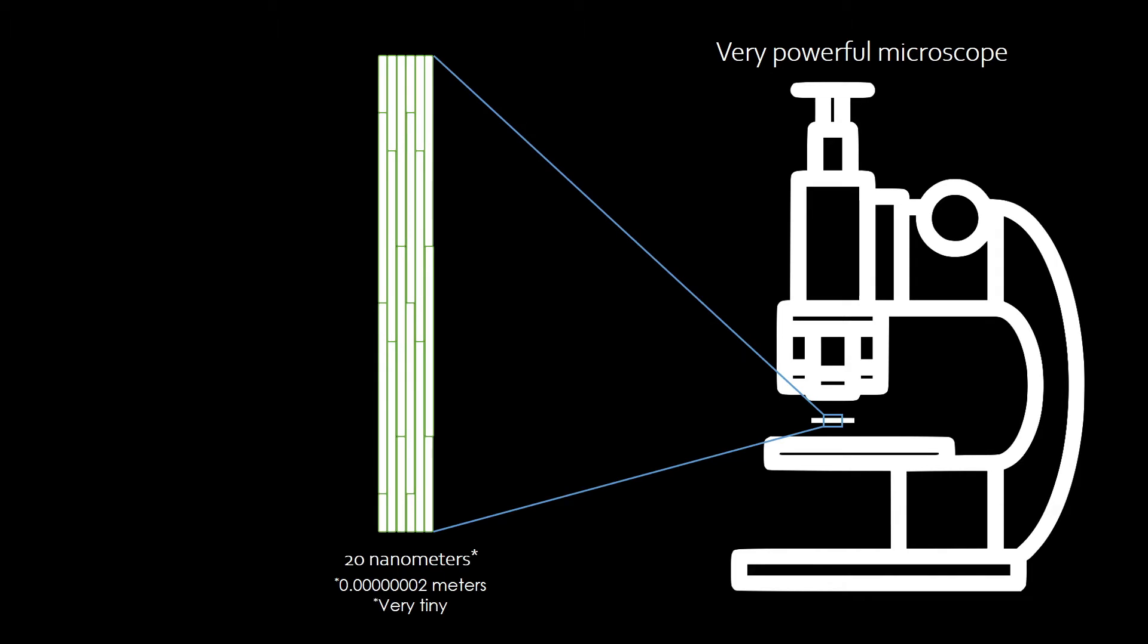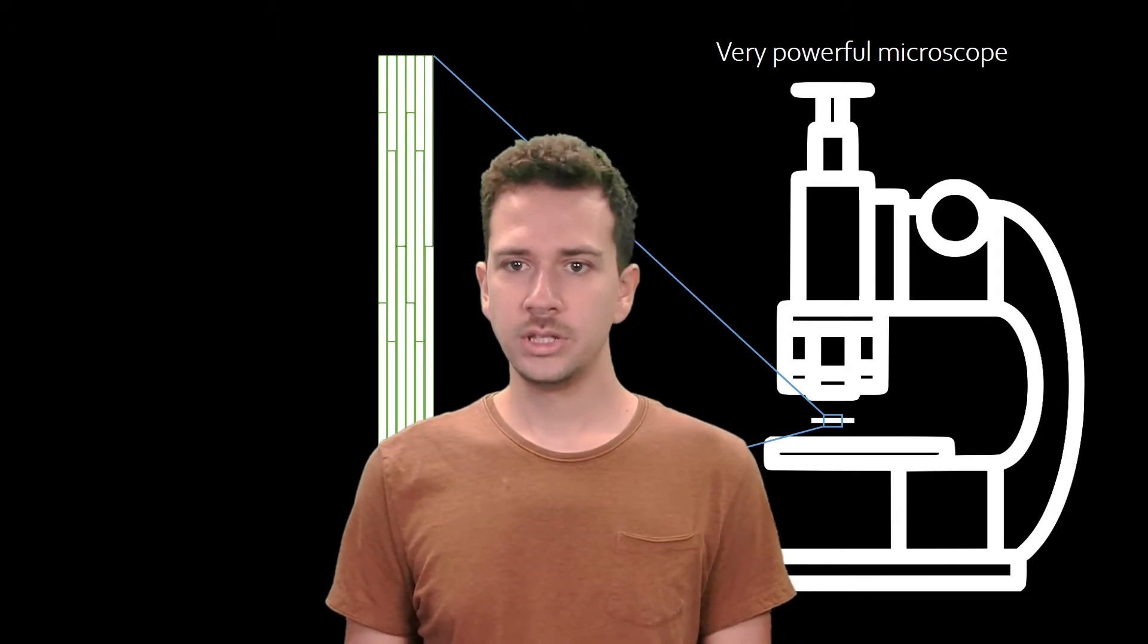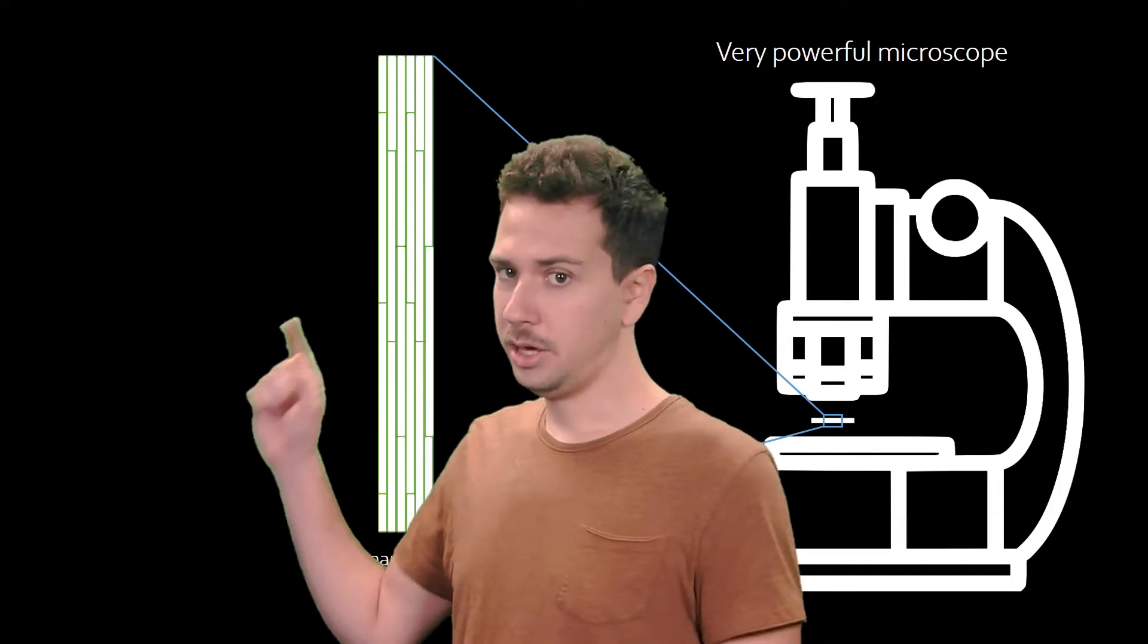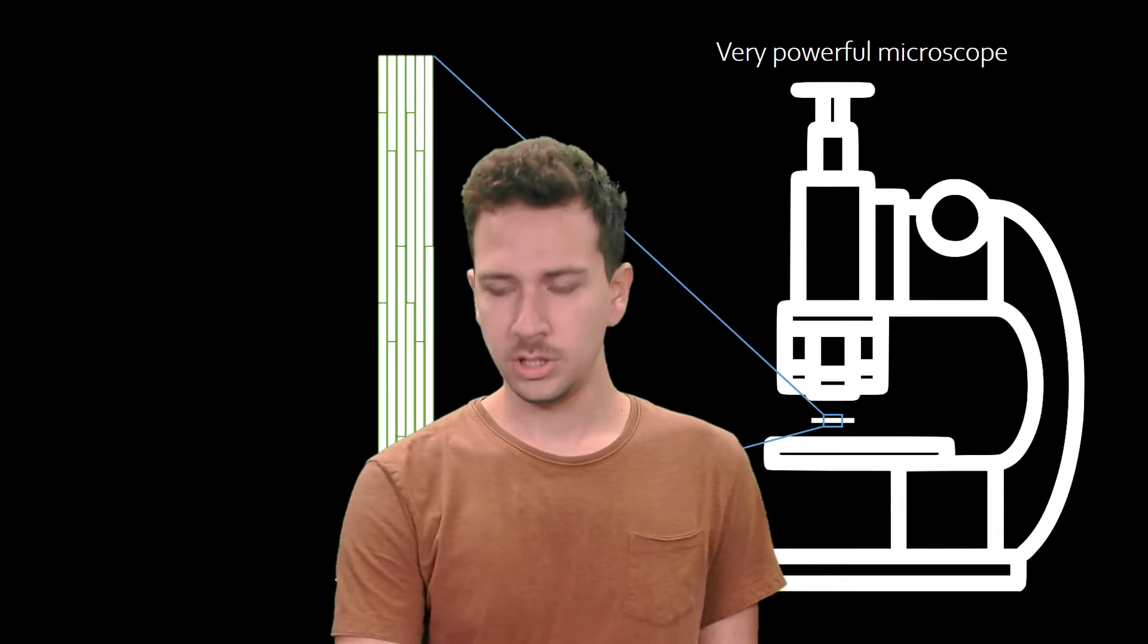If you put a spider web under a powerful microscope, you see that each string is made of thousands and thousands of very tiny fibers. And it turns out that when a material is made of tiny building blocks, like these fibers, it is very strong. And the smaller these building blocks, the stronger the material.